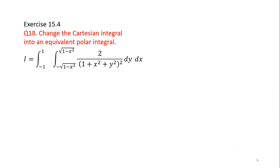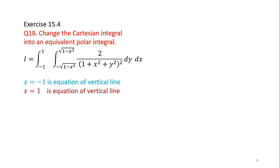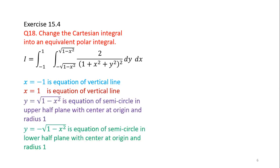After knowing these basic things, you are able to solve this question: change the Cartesian integral into the equivalent polar integral. In order to convert this, we have to sketch the region of integration. The limits of x are minus one and one, so x equals minus one and x equals one are vertical lines. y equals square root of one minus x square is a semicircle in the upper half plane with center at origin and radius one. y equals minus square root of one minus x square is a semicircle in the lower half plane. Combining both gives a complete circle.